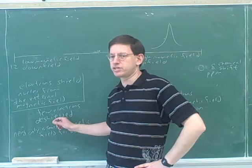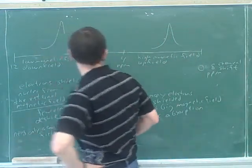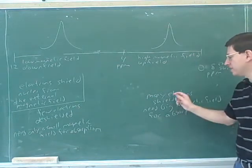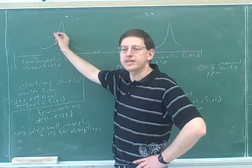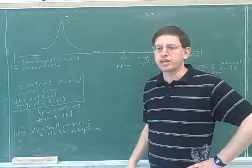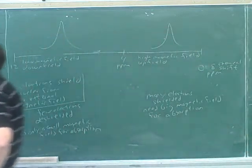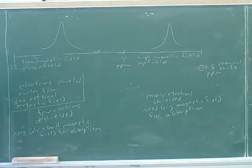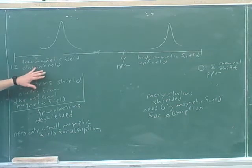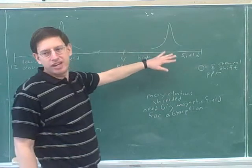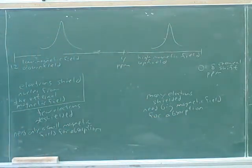If you're deshielded — if you have few electrons — your peak should be on the left-hand side. You should have in your notes: on the left-hand side of the axis — deshielded, downfield, high chemical shift; and on the right-hand side — shielded, upfield, low chemical shift. Shielded is the right-hand side, which means upfield, which means low chemical shift. Deshielded is the left-hand side, which is downfield, which is a high chemical shift.